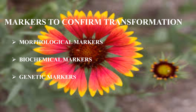After transformation, there are three types of markers to confirm transformation. Morphological markers include rapid growth, increased branching, and plagiotrophism. For biochemical markers, since opine synthesis is encoded by the T-DNA of the RI plasmid, opines serve as effective biochemical markers.